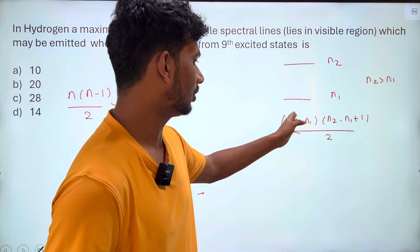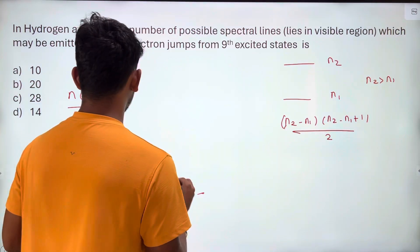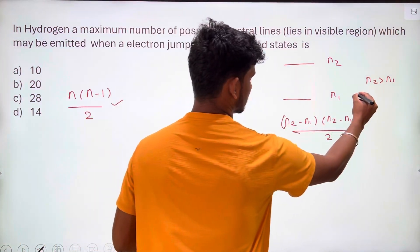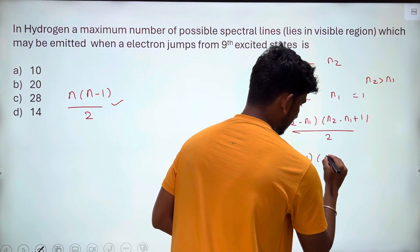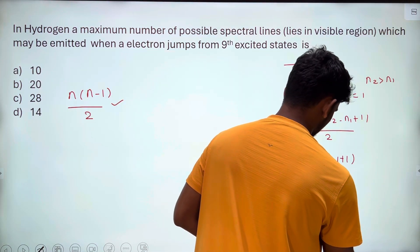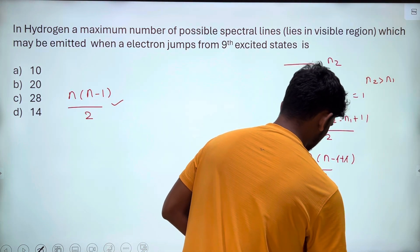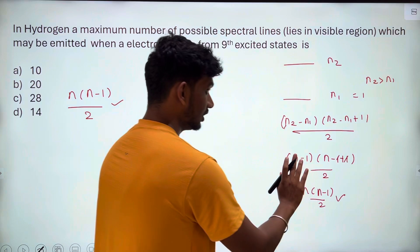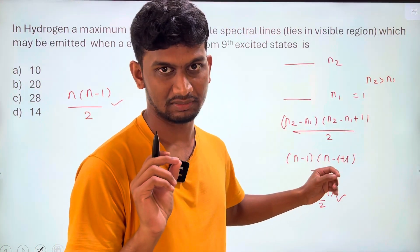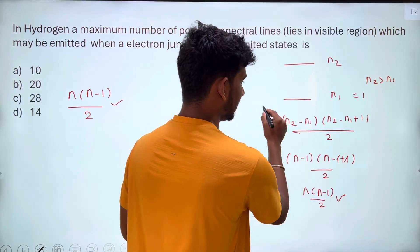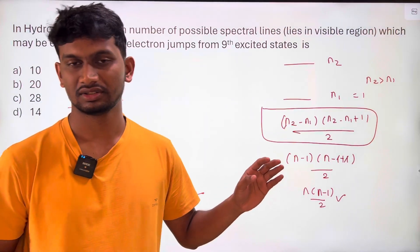That is, n minus n1 into n minus n1 plus 1 by 2. Now, n1 is equal to 1, that's the ground state. So when we have to do this, n minus 1 into n minus 1 plus 1 by 2. Plus 1 minus 1 cancel, n into n by 2. So n2 and n1 total number of possible spectrum lines is n2 minus n1 into n2 minus n1 plus 1 by 2.